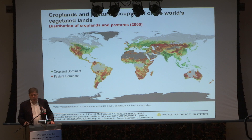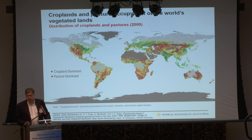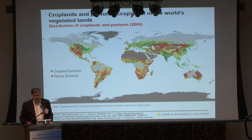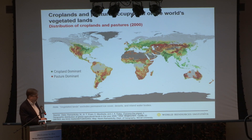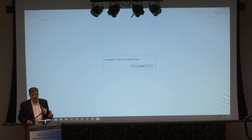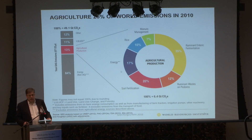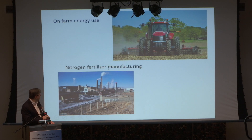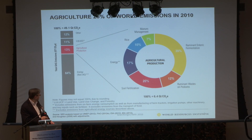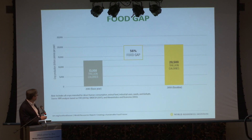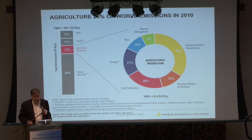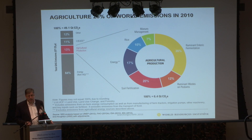We start with the fact that agriculture occupies about half of the world's vegetated land, and that occupation by itself is the largest source of biodiversity loss. Agriculture uses about 85–90% of all the world's water withdrawals, depending on how you count it. Agriculture is also a source of about 25% of greenhouse gas emissions, with a little less than half of that due to land use change — from converting forests and the ongoing degradation of peatlands.